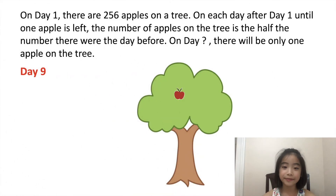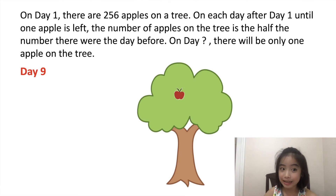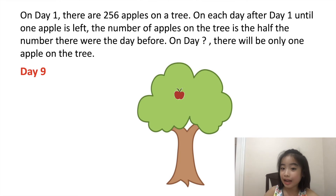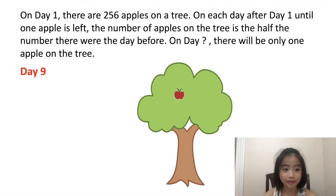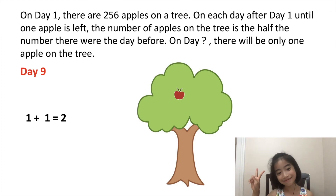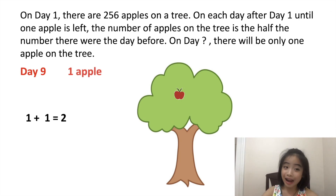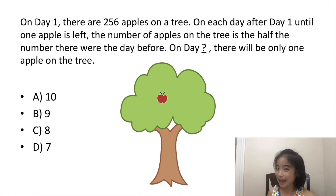Now let's figure out how many apples there are on day nine. On day eight there are two apples. So on day nine, it's half of the number of apples on day eight, which is one, because one plus one equals two. So on day nine, there is one apple. So now let's go back to the question.